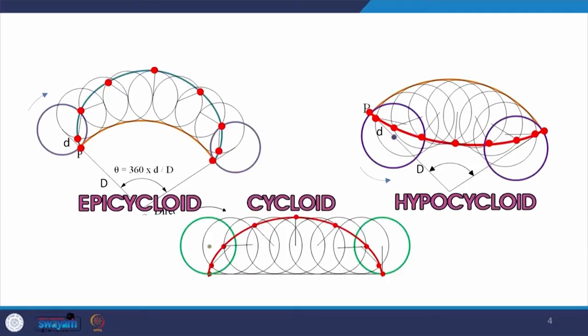Another type of curve is epicycloid and hypocycloid. Cycloid we have seen as the circle moves along a straight line. Now if the circle moves along another circle — if it is moving at the outer edge of the circle such that the path on which it is moving is inside it and the circle moves on the outside — the path that it traces with the point on the circumference of the moving circle is called an epicycloid. However, if the moving circle is inside the path which is circular, then the path traced by this point on the circumference will be called a hypocycloid.